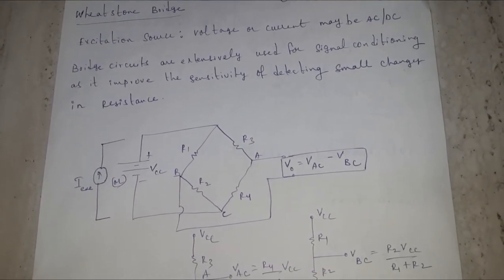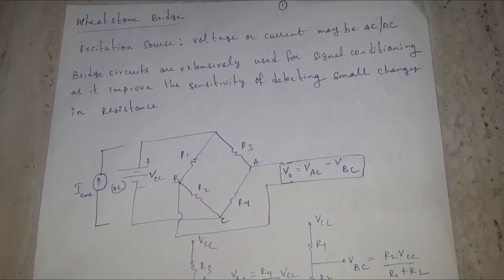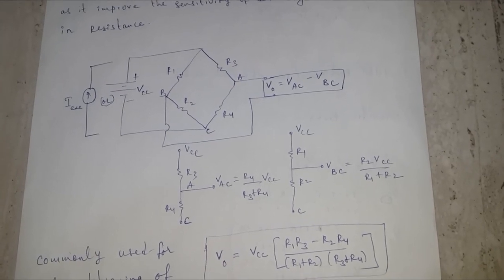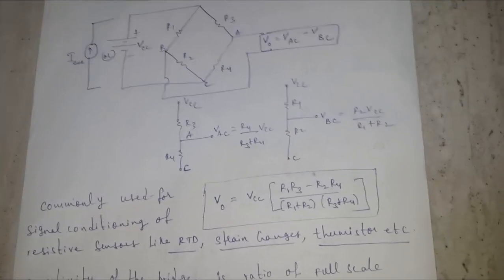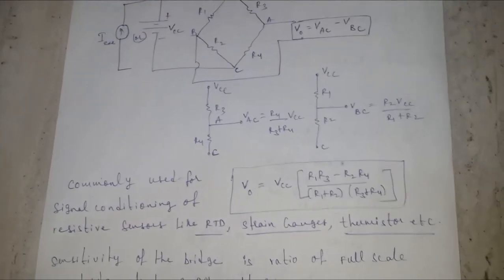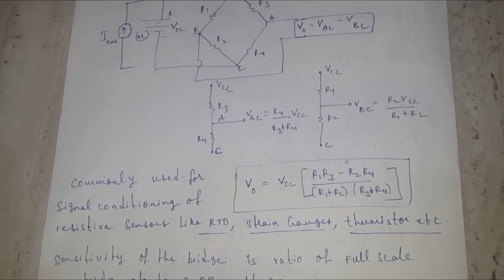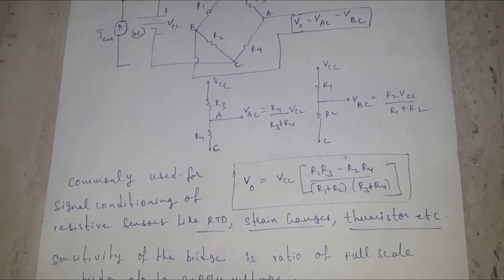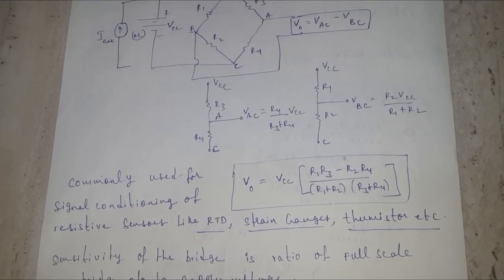The excitation can be a current source or a voltage source, and it may be AC or DC. If you see this Wheatstone bridge, the output equation when derived gives V_out equal to VCC times (R1·R3 minus R2·R4) divided by the denominator. This is a commonly used signal conditioning circuit for resistive sensors.